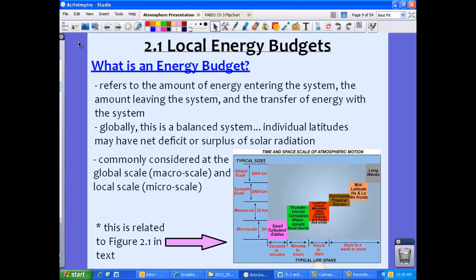Well, the energy budget refers to the amount of energy entering the system, the amount leaving the system, and the transfer of energy within the system. So basically what this means is the system we're talking about is the global energy system. We're talking about Earth. The amount of energy is from the sun, the amount leaving the system is from the atmosphere or from the ground, and the transfer of energy between those two.